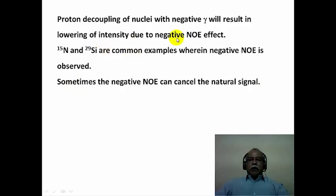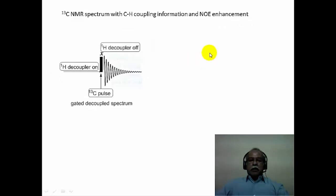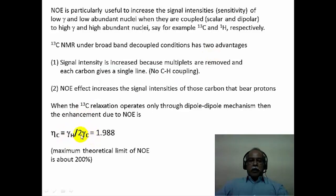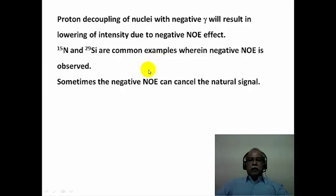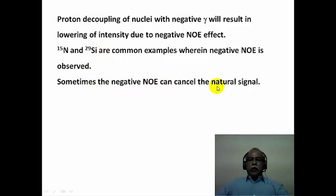Proton decoupling of any nucleus with a negative gamma will result in lowering of intensity due to the negative NOE effect. If the gamma of the observing nucleus is negative, the overall intensity becomes negative—a depletion. Nitrogen-15 and silicon-29 are common examples where negative NOE is observed because their gamma values are negative. Sometimes the negative NOE can completely cancel the natural signal of the sample if the two are of equal magnitude.